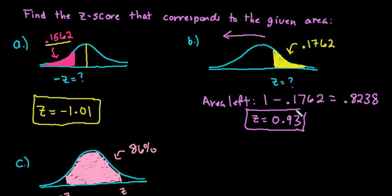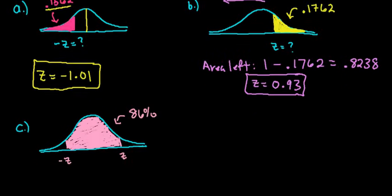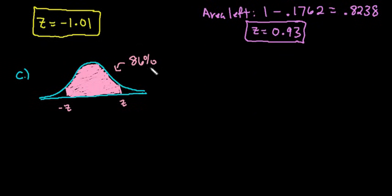So that would be the z-score that corresponds to the area that has .1762 to the right of it. For the last one, I wrote it as a percentage because sometimes it will be expressed as a percentage. It may say find the area that 86% is between two values or it may give it to you as .860. Just remember that this is really the same thing as .8600. So this is what we would be looking for in our table.